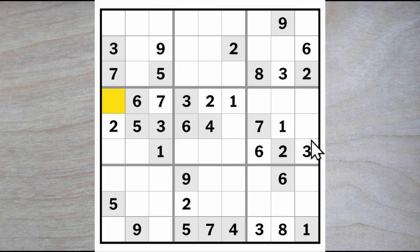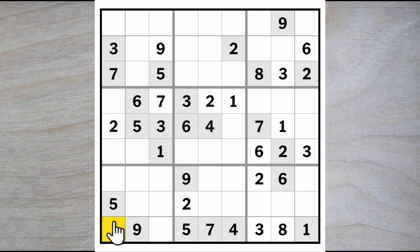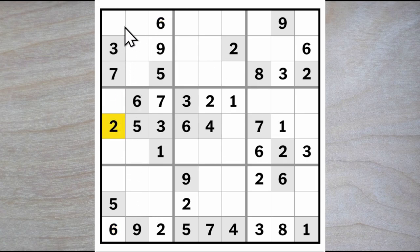We found a 2, and now we know that these two 2s block these three squares, and this 2 blocks this square in addition, so a 2 must go here. Now these must be a 2 and a 6. The 2 blocks down, so here's a 6 and here's a 2. The 6 blocks up, and so does this, so here's a 6.